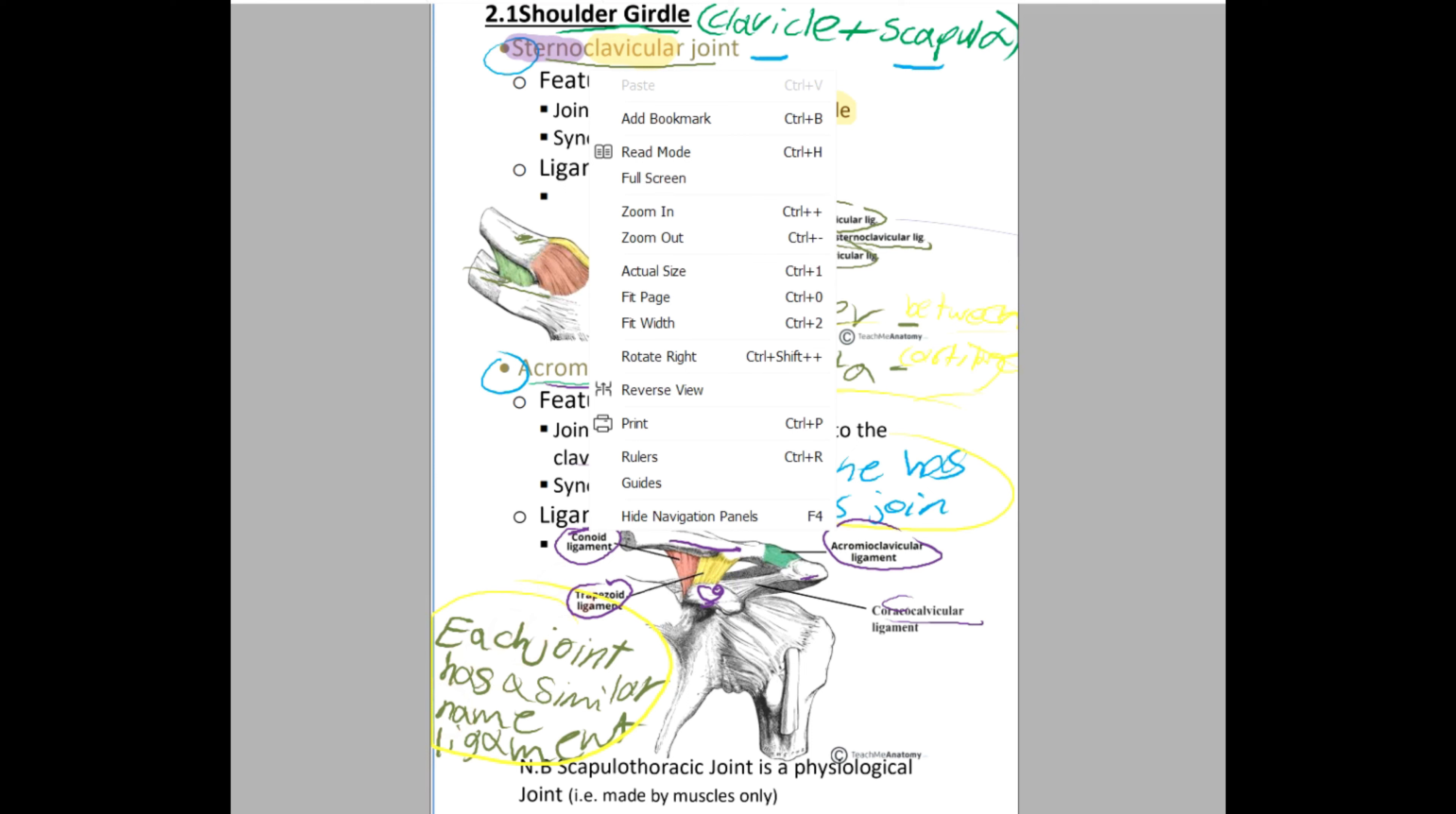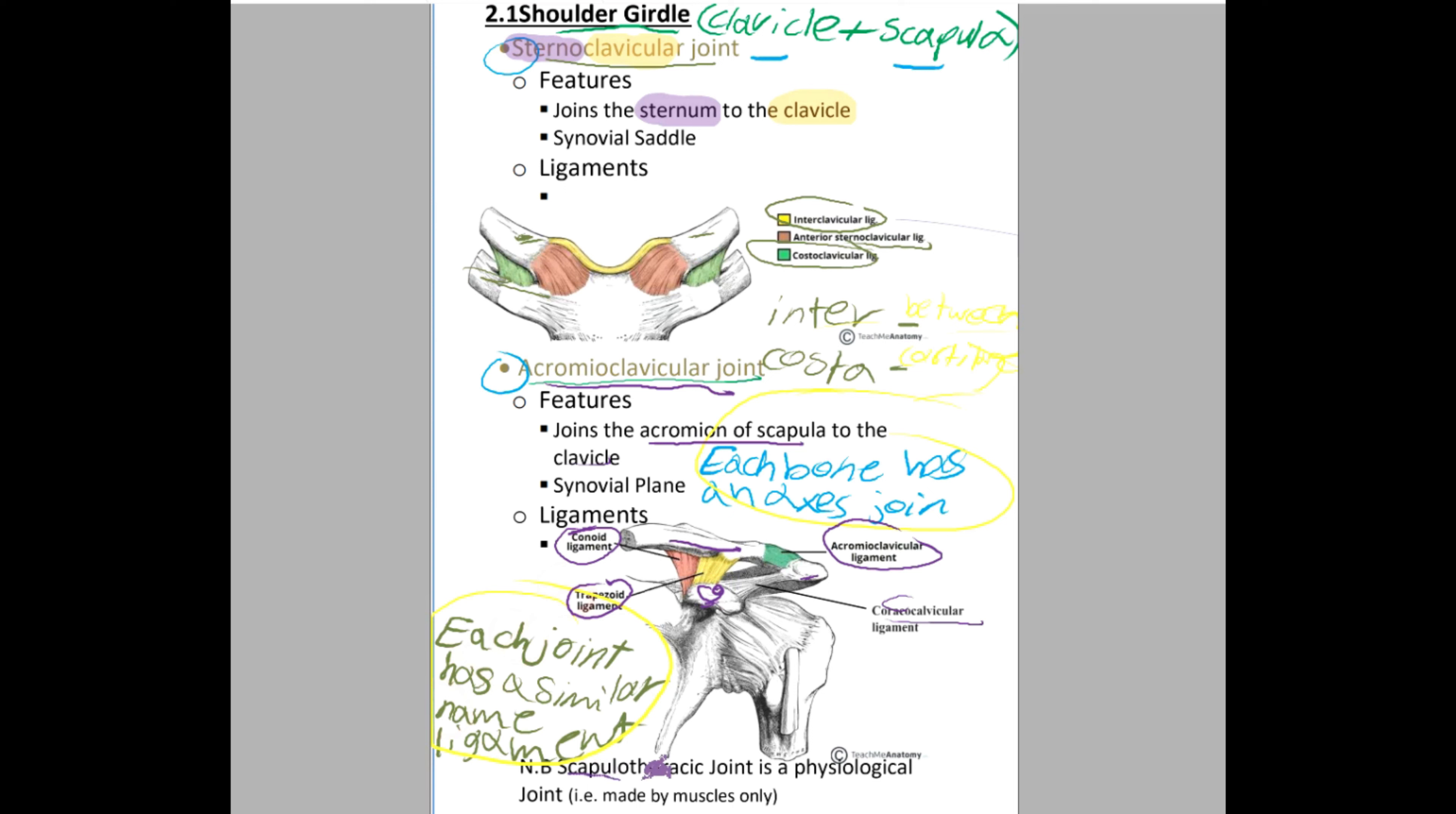Lastly is the scapulothoracic joint and it is a physiological joint made by muscles only. What does this mean? If you can clarify this point more you can write it in the comments.